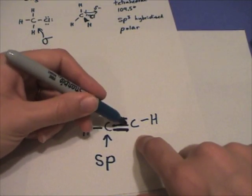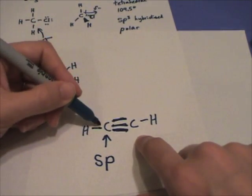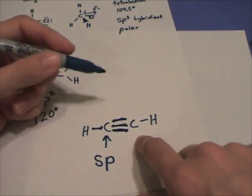And each one of these dashes represent two electrons. So there's one, two, three, four, five, six electrons in a triple bond, two electrons in a single bond.